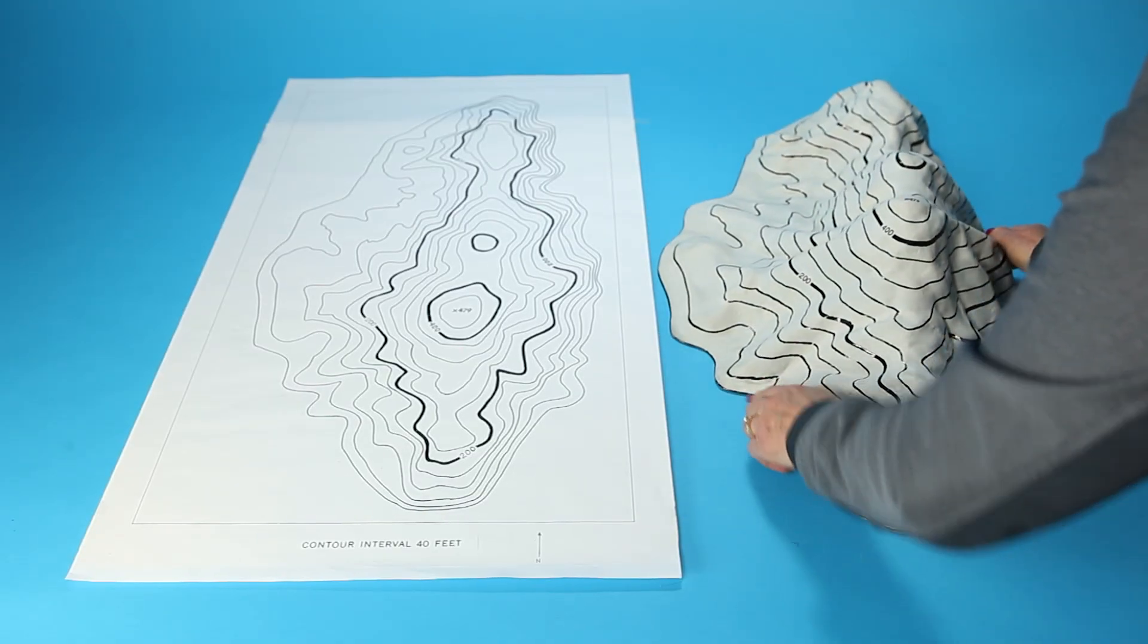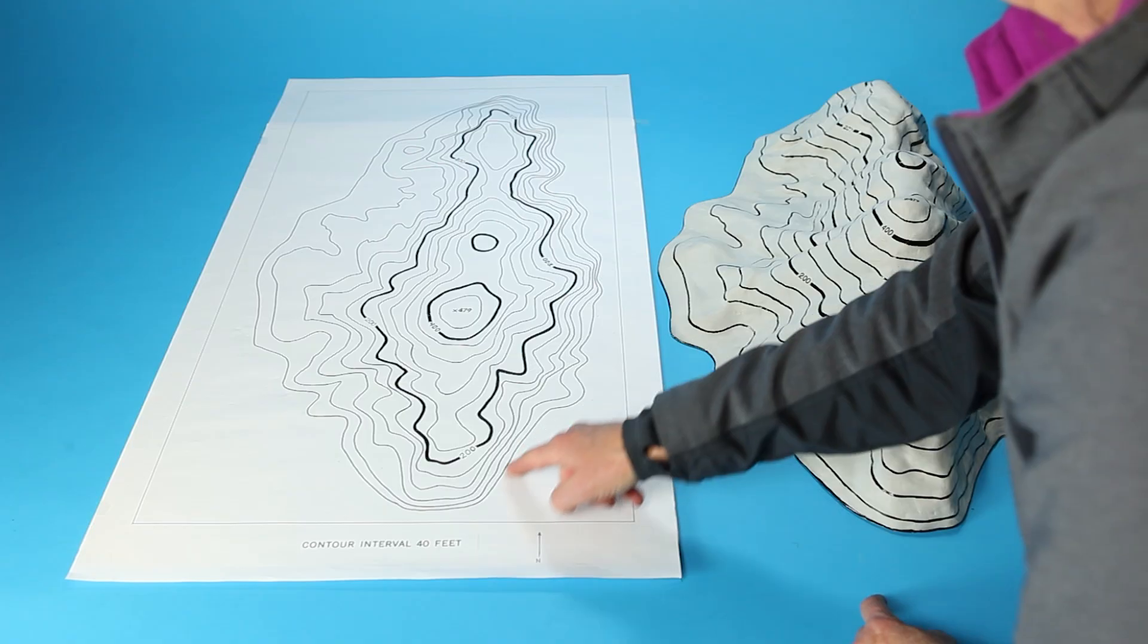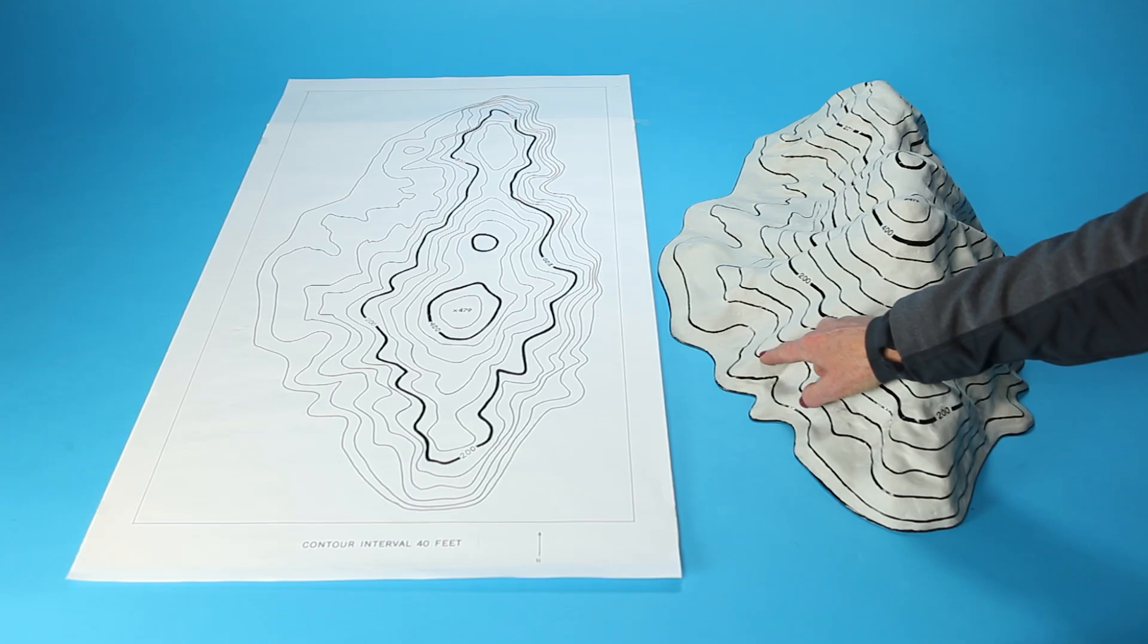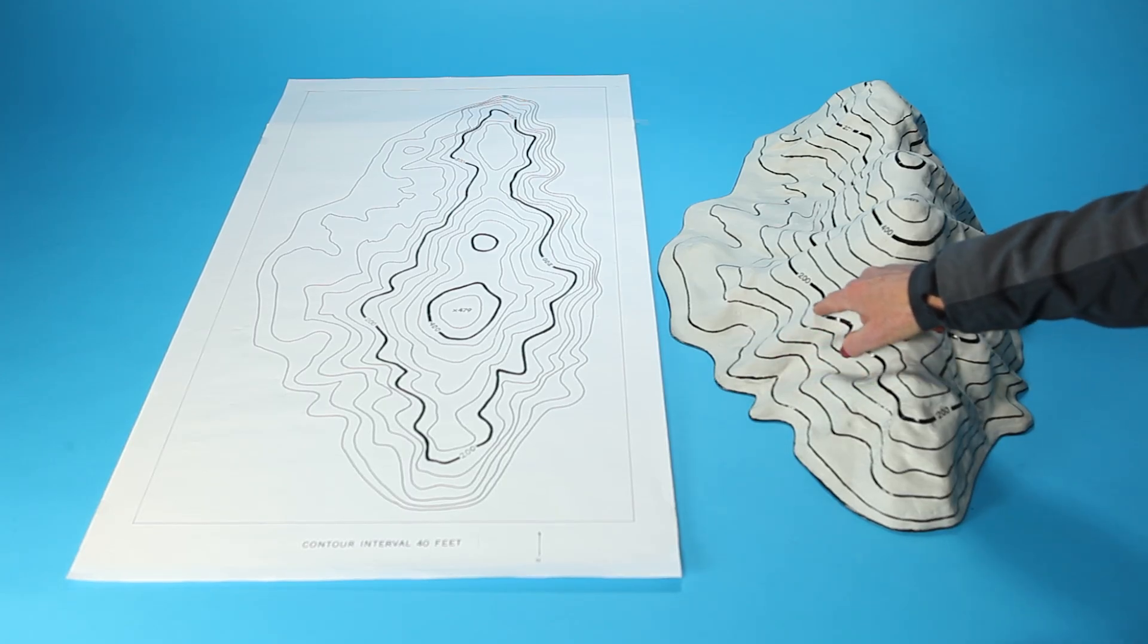On an island, where is the first contour line? It's the shoreline. And the next line up is 40 feet above the shoreline. And the next line up is 80 feet above the shoreline. And then 120 feet, 160 feet, and 200 feet.